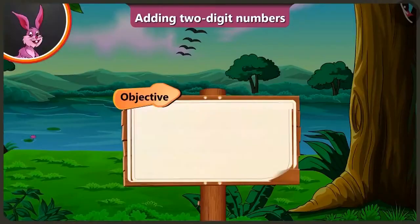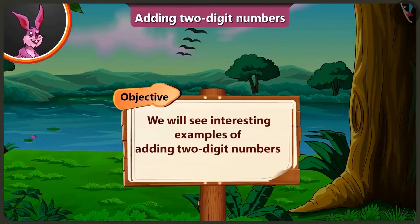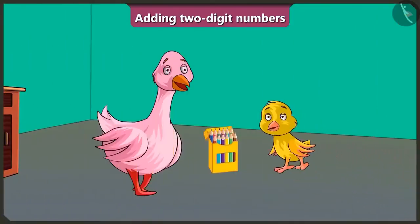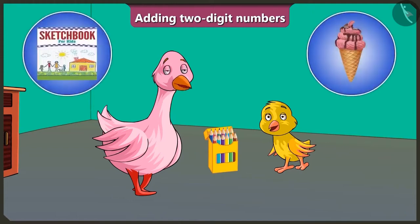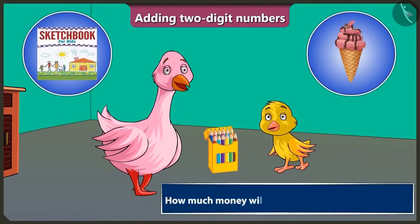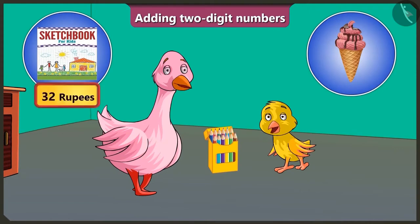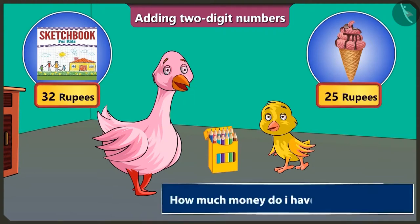Today we will see interesting examples of adding two-digit numbers. Aunty, you brought colour pencils for me, but I don't have any paper. Do you want to draw pictures? Yes, Aunty. Ok, Pilu — you go to the market and buy yourself a sketchbook and an ice cream. Oh, wow! Ice cream! Aunty, please give me some money to buy the two items. So tell me — how much money will you need to buy the two items? Hmm, 32 rupees for the sketchbook and 25 rupees for the ice cream.